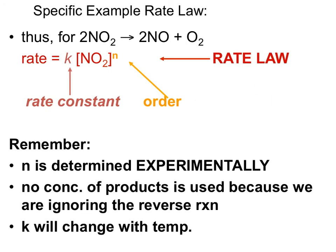Looking at a specific example of a rate law, remember when writing rate law expressions we ignore our products. We have our rate constant times the concentration of our reactant to some power N — our order. I want to emphasize that N is experimentally determined. N is not derived from coefficients or anything of that sort, so make sure you are not accidentally plugging in those coefficient values as exponents. N has to be established experimentally.